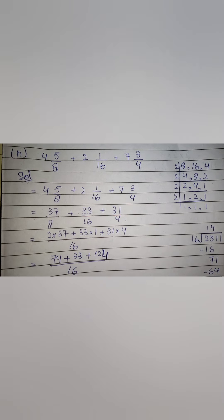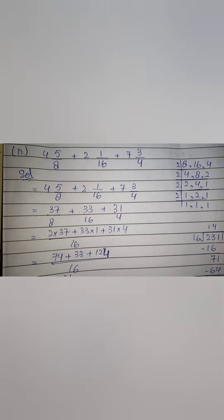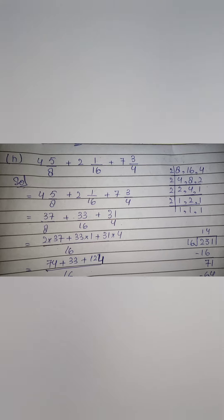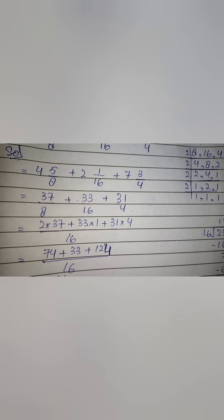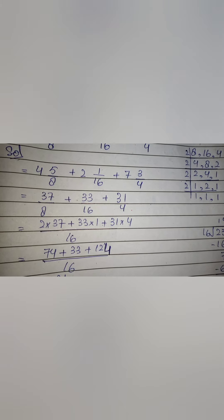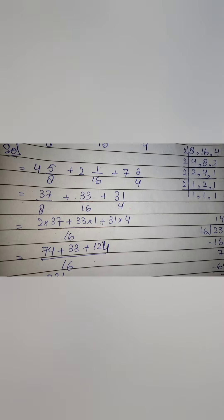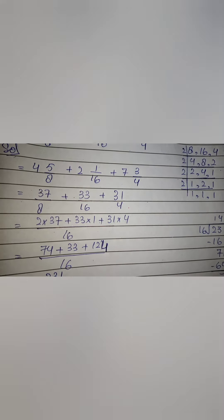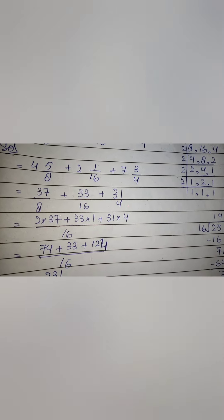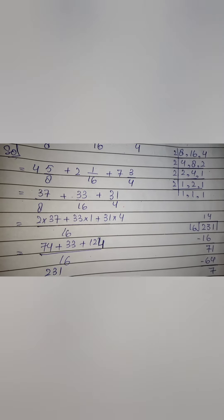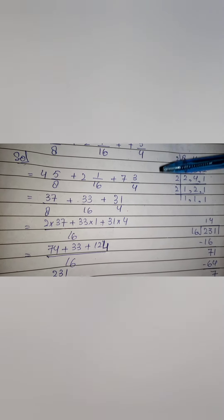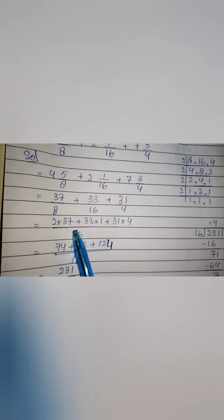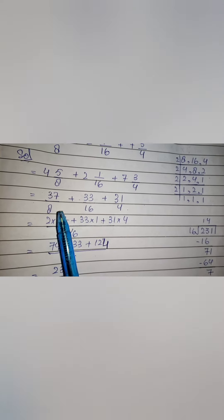Ab numerator bada hai, denominator chhota hai, to hum is ko mazeed solve kar sakte hain. To six fifty-nine ko divide karwaenge thirty-six se. Thirty-six × 1 = 36, minus kiya to twenty-nine bacha. Phir ye nine aaya — thirty-six × 8 = two eighty-eight, hamare paas bacha eleven. To hamara answer ho jaega eighteen whole eleven upon thirty-six.